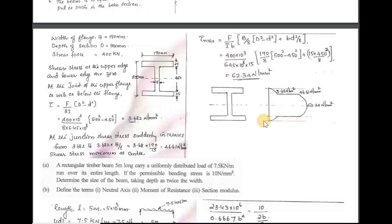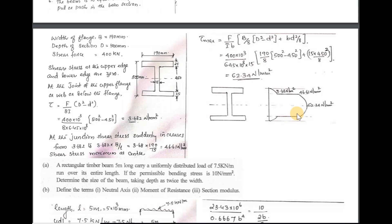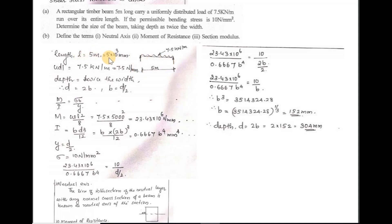Next question: a rectangular timber beam 5 metres long carries a uniformly distributed load of 7.5 kN per metre run over the entire length. If the permissible bending stress is 10 N/mm², determine the size of the beam taking the depth as twice the width. The span is 5 m, converted to 5000 mm. The UDL value is 7.5 kN/m.